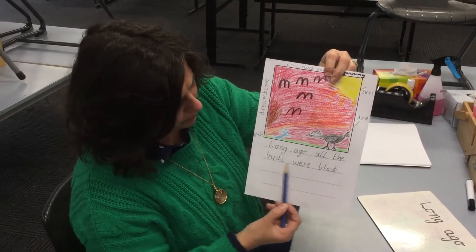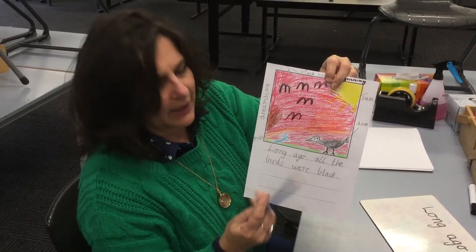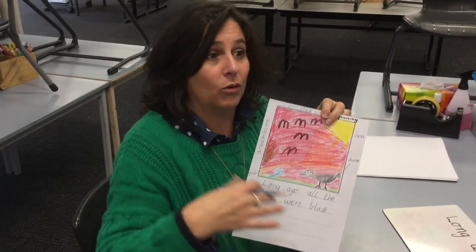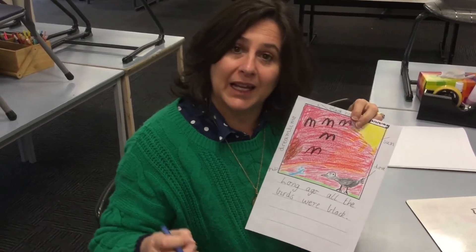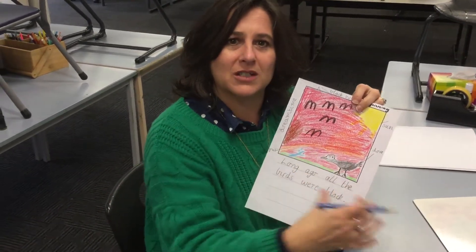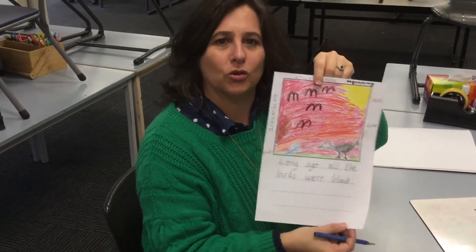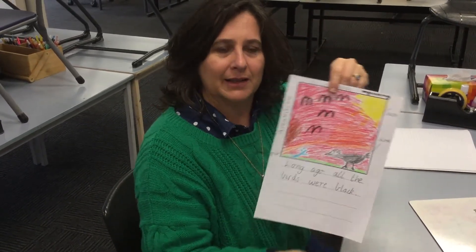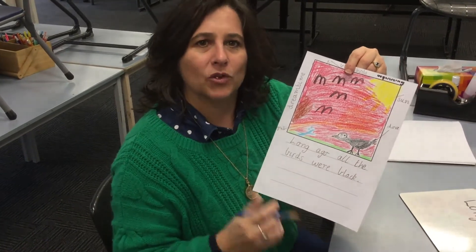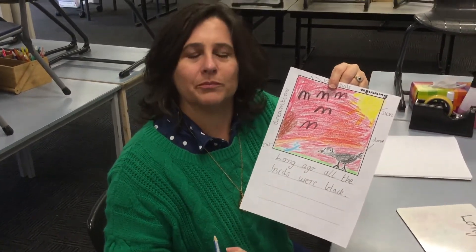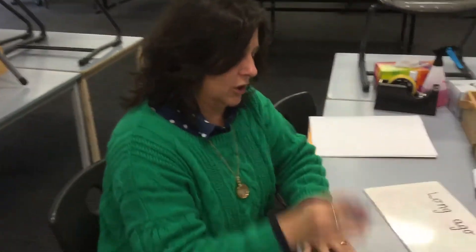Long ago, all the birds were black. Now you might like to go 'long, long ago in the dream time all the birds were one colour, all were black.' It's up to you to decide how much writing you want to do, because we do have this side as well and it's your story. I think all preps could do this much — absolutely. So, long ago, all the birds were black.